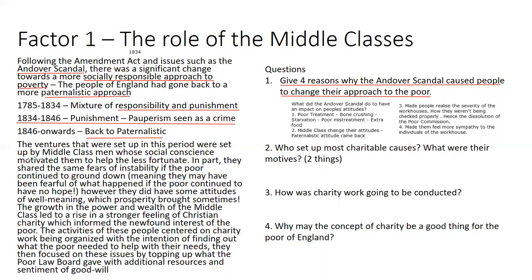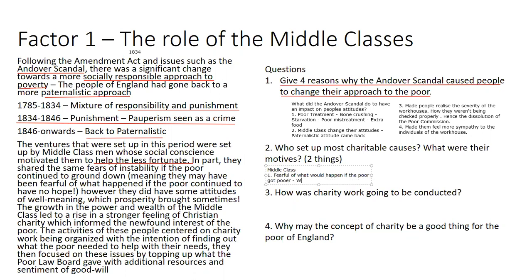The charitable ventures set up following 1846 were actually established by middle-class men whose social conscience motivated them to help the less fortunate. One reason the middle class got involved was fear of instability — they worried about what would happen if the poor got poorer. Would they revolt? Would they cause more issues? That was a minority motivation, but it was one reason they got involved.